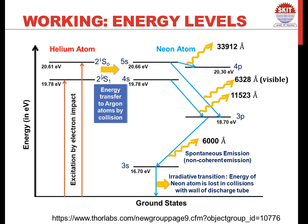These two are metastable states. The helium atom collides with the neon atom, transferring energy. Once the neon atom is excited, transitions are possible from 5s to 4p, 5s to 3p, and 4s to 3p — these are three possible de-excitation transitions. If neon migrates from 5s to 4p, there is emission of a 33912 Å photon, which falls in the infrared region and is not visible. The transition from 5s to 3p originates a 6328 Å wavelength, which is visible — orange-red in color.